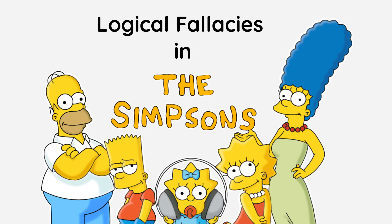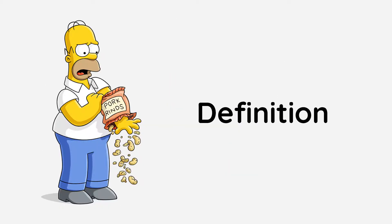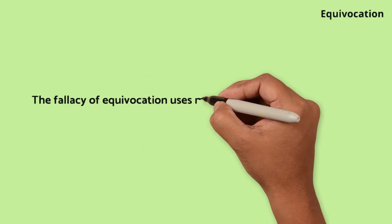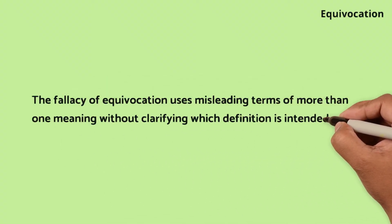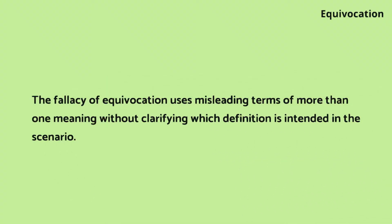Logical fallacies in The Simpsons: Equivocation. The fallacy of equivocation uses misleading terms of more than one meaning, without clarifying which definition is intended in the scenario.